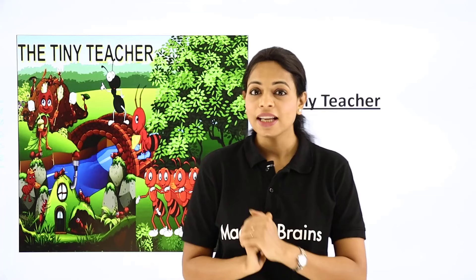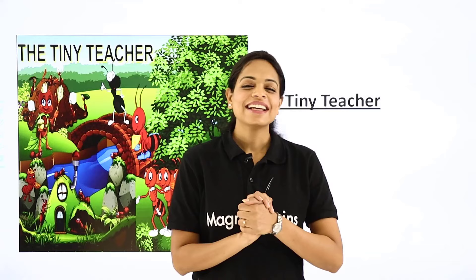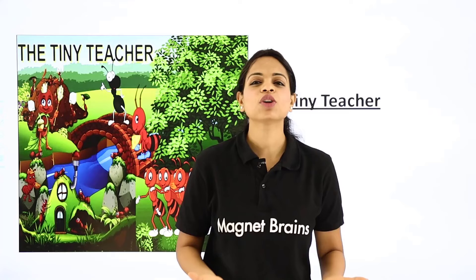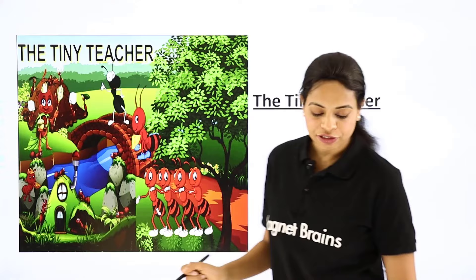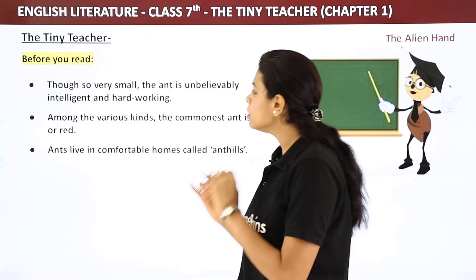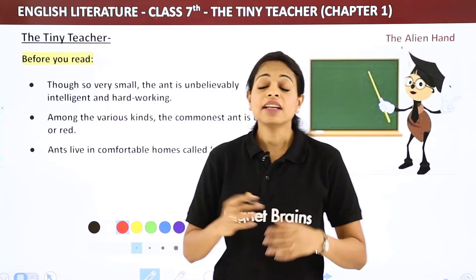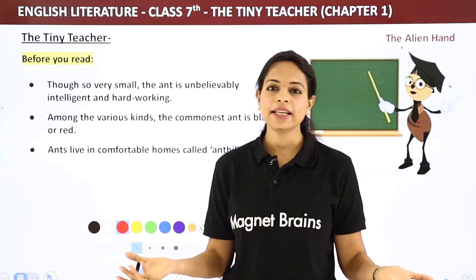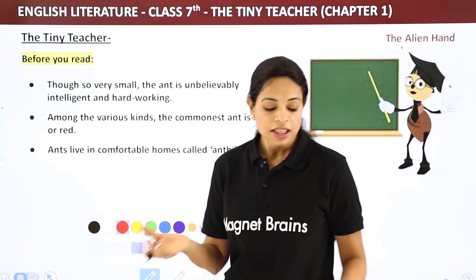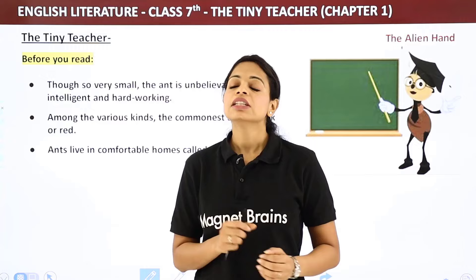So who is our tiny teacher? With the help of the picture, we know we are talking about the tiny ant. The ant is unbelievably intelligent and hardworking. Among the various kinds, the commonest ant is black or red — the black ant we can pass by, but the red one bites quite badly! Ants live in comfortable homes called ant hills.